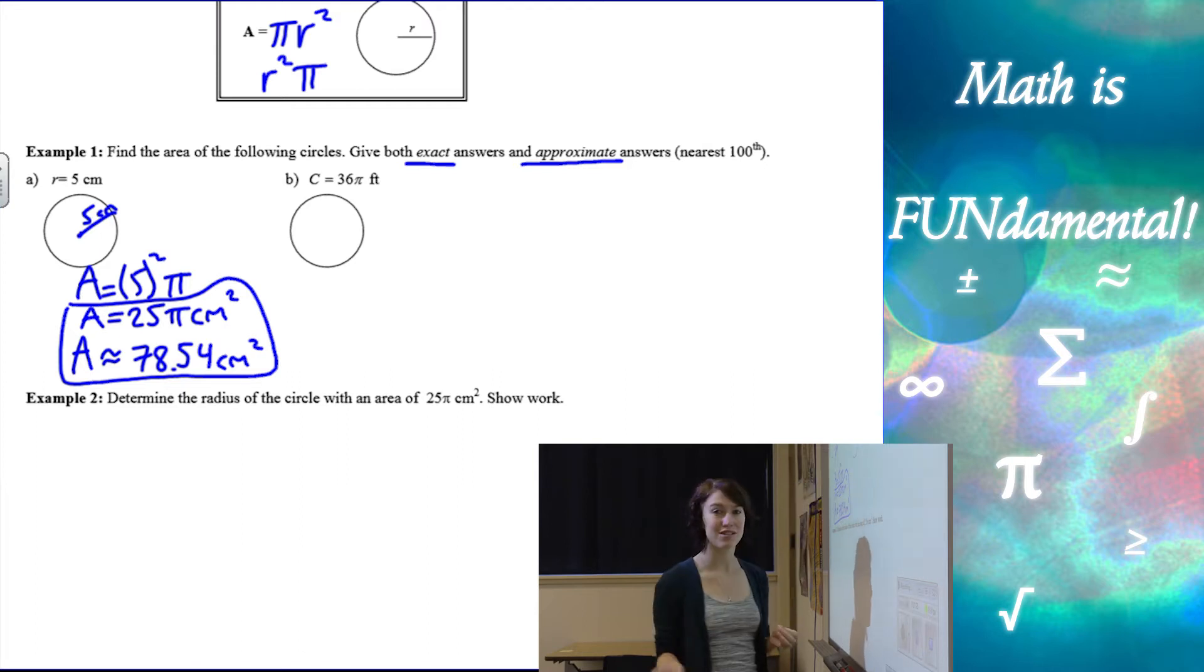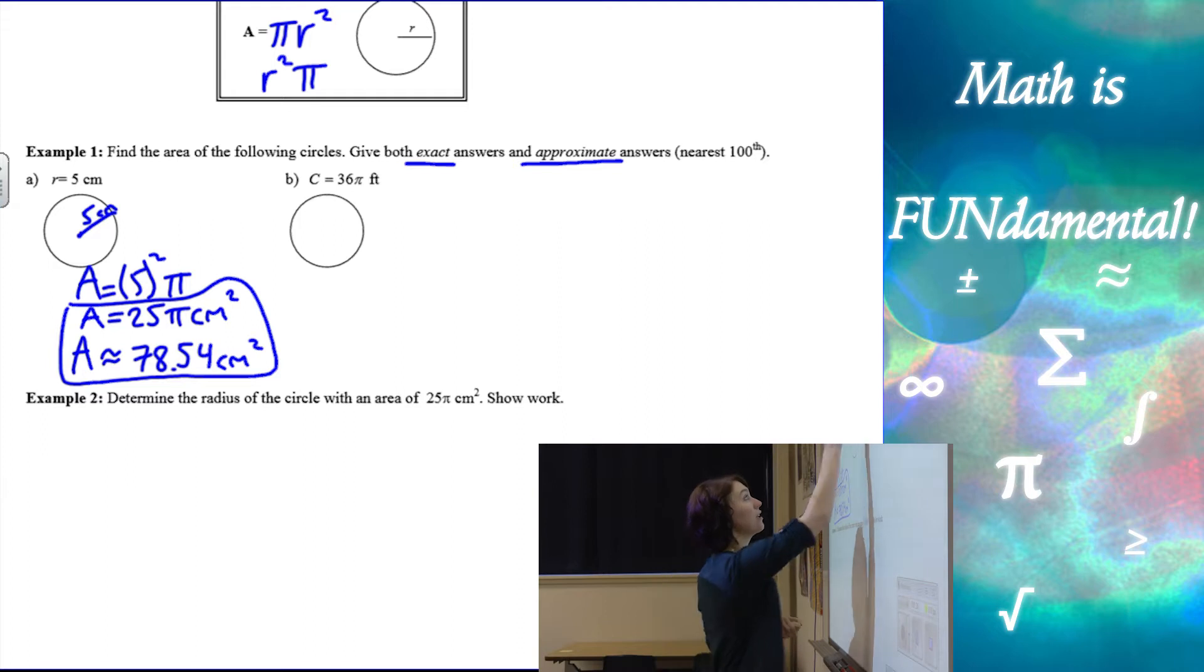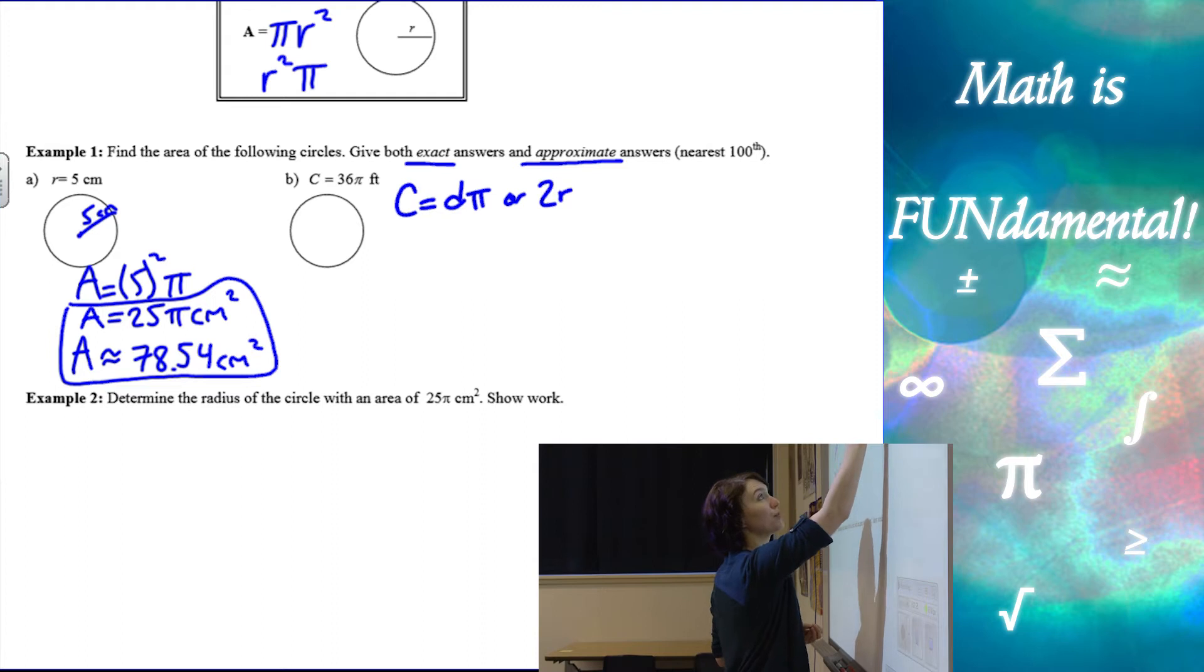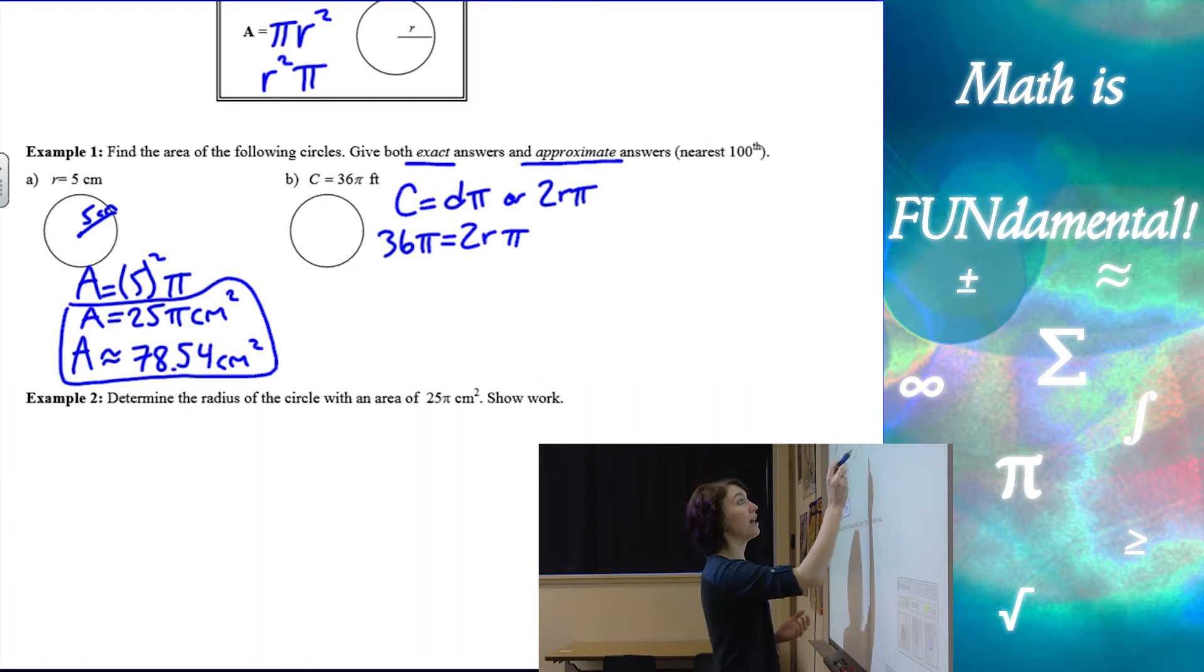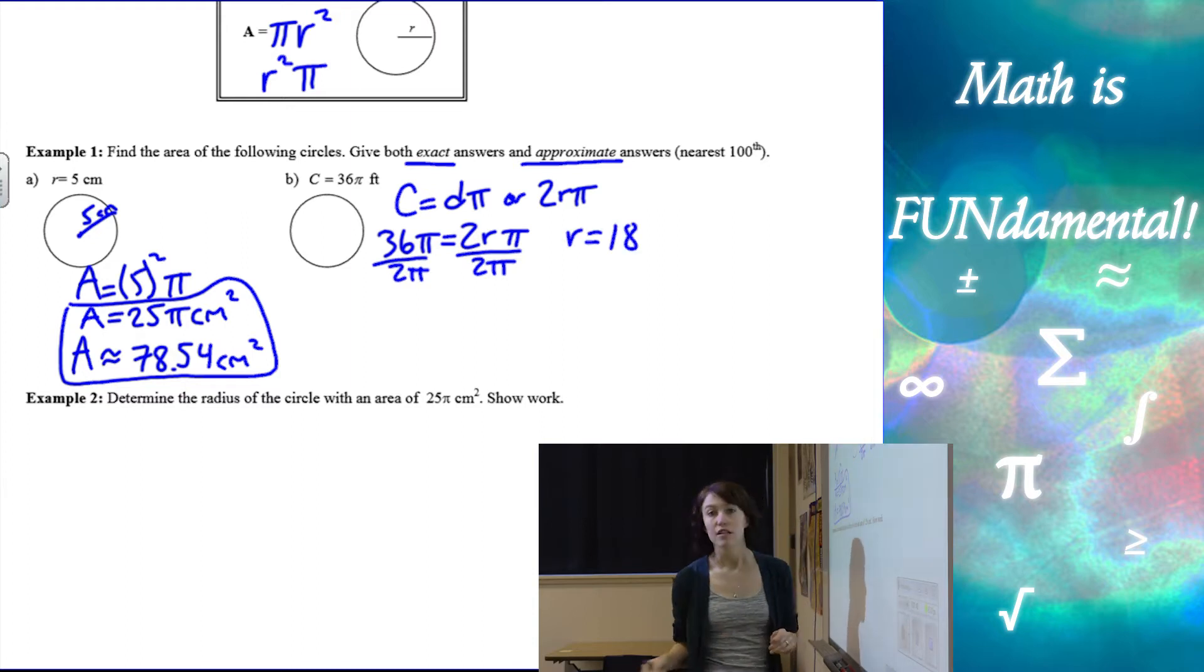Alright, the next one tells us the circumference, and we need to use the circumference to find area. So a little review, circumference is diameter times pi, or 2 times the radius times pi. So if I know that 36 pi is 2 times the radius times pi, since I want to find the radius to do my area, then I can divide by 2 pi on both sides to figure out that my radius is 18. So now we can use the radius to find the area of our circle.